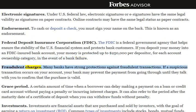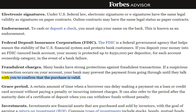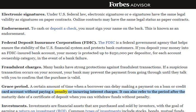Fraudulent Charges: Many banks have strong protections against fraudulent transactions. If a suspicious transaction occurs on your account, your bank may prevent the payment from going through until they talk with you to confirm that the purchase is valid. Grace Period: A certain amount of time when a borrower can delay making a payment on a loan or credit card account, without paying a penalty or incurring interest charges. It can also refer to the period after the maturity date of a certificate of deposit, when you can withdraw funds without penalty.